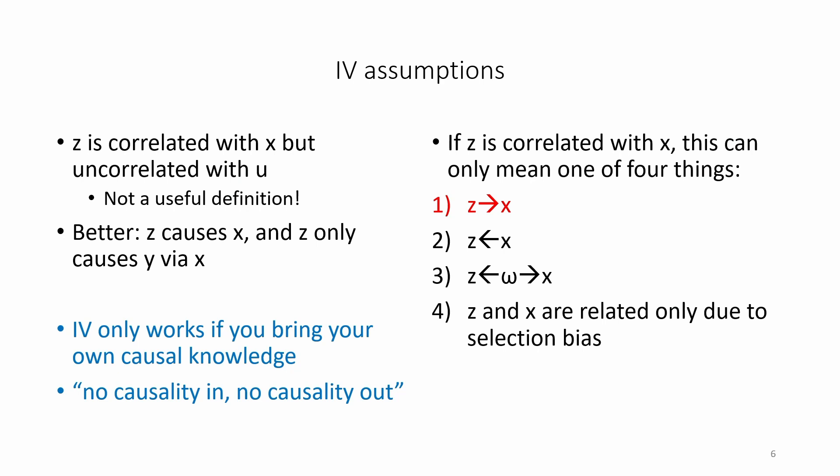The third case occurs when z and x are just trending together, being driven by background factors. The third case corresponds to the case of spurious regression, which is often found in social science applications. Causal knowledge is gold. Spurious correlation is junk. IV doesn't let you turn junk into gold. Instead, you need to bring your own causal knowledge when applying IV.